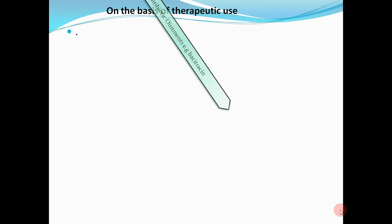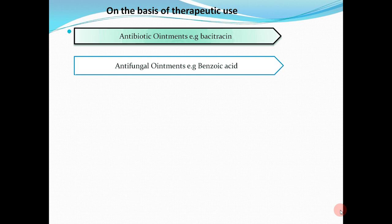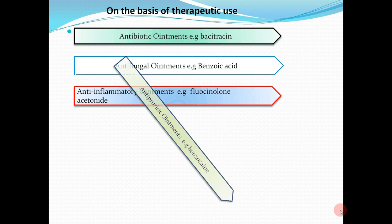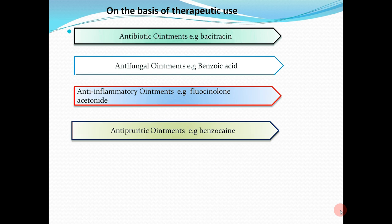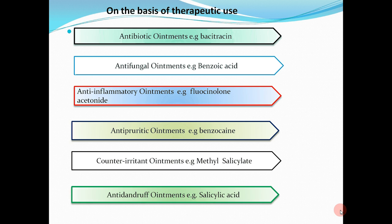The second classification is on the basis of therapeutic use: first, antibiotic ointment — for example, bacitracin; second, antifungal ointment — for example, benzoic acid; third, anti-inflammatory ointment — for example, fluocinolone acetonide; fourth, antipruritic ointment — for example, benzocaine, meaning drugs that relieve itching; fifth, anti-inflammatory ointment — for example, salicylic acid.